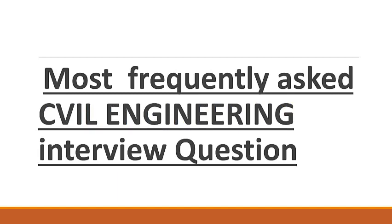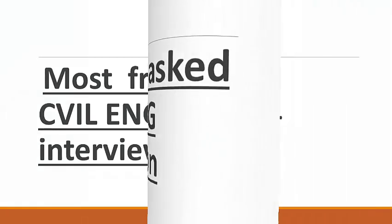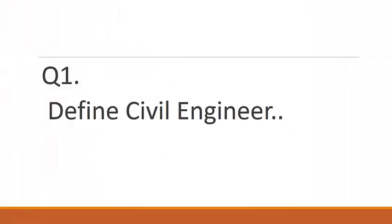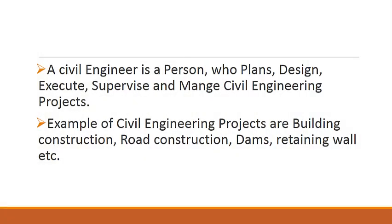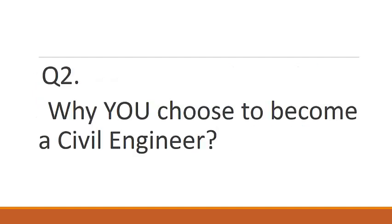The first question is: define a civil engineer — who should be called a civil engineer? The answer is a simple one: a civil engineer is a person who plans, designs, executes, supervises, and manages civil engineering projects.